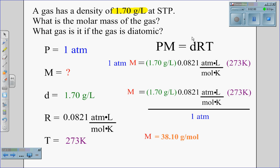Using the ideal gas law equation, PM equals DRT, our atmosphere is 1. Molar mass is what we are looking for. 1.7 grams per liter is the density. 0.0821 atmospheres times liters divided by moles Kelvin is our gas law constant.